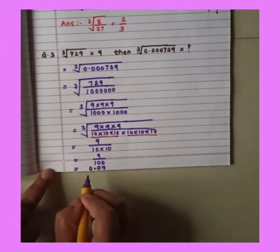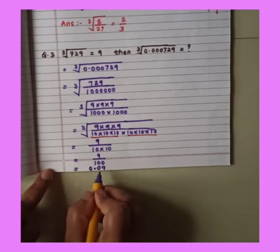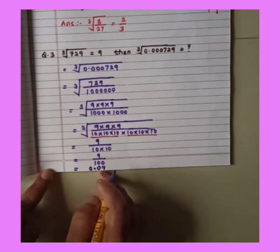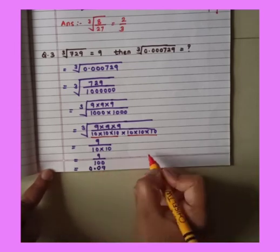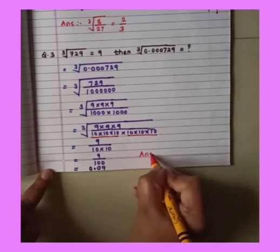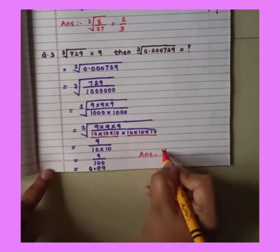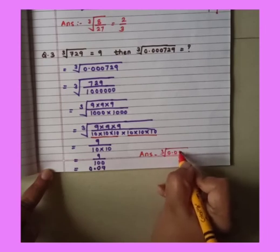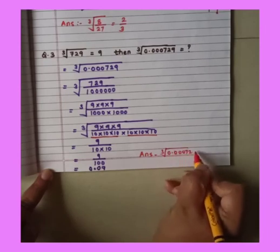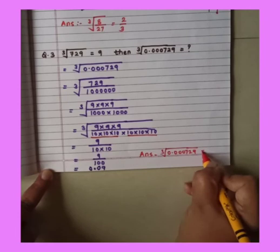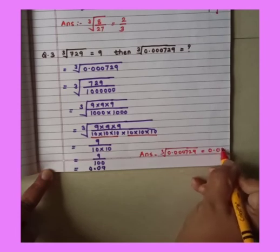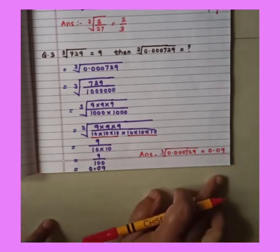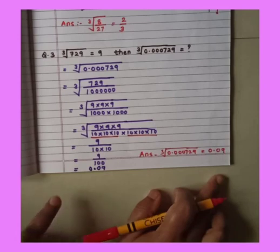So 9 upon 100 we can write in a decimal form as 0.09. So that means we got answer cube root of 0.000729 is 0.09. Understood students? Any doubt in this question?